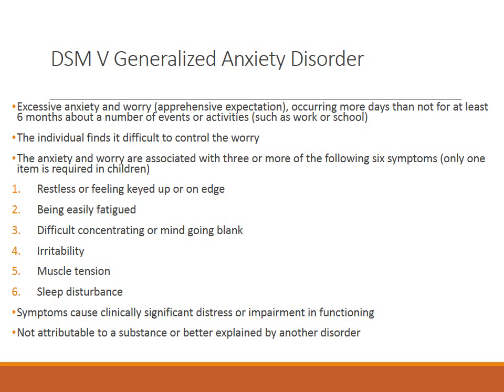This is our DSM-5 — this is how we make our diagnosis for Generalized Anxiety Disorder. Excessive anxiety and worry occurring more days than not for at least six months about a number of events or activities such as work or school. The individual finds it difficult to control the worry. The anxiety and worry are associated with three or more of the following six symptoms — only one is required in children: restless or keyed up, feeling on edge, being easily fatigued, difficulty concentrating or mind going blank, irritability, muscle tension, or sleep disturbance. Symptoms cause clinically significant distress or impairment in functioning, and of course it's not attributable to a substance or better explained by another disorder.